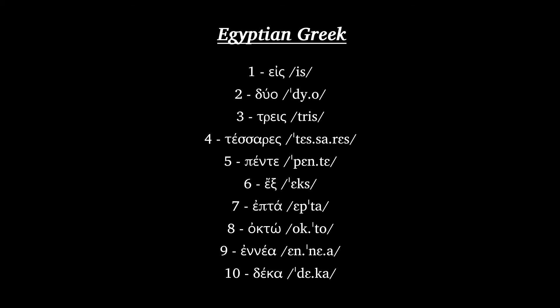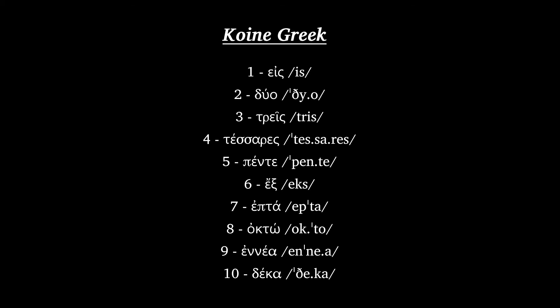Koine Greek: Heis, Duo, Tris, Tessares, Pente, Hex, Hepta, Okto, Enea, Deka.